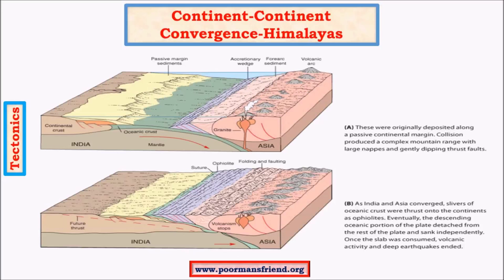One important point is that the Himalayan rivers - Ganga, Brahmaputra, and many other ancient rivers now extinct - were all present much before the formation of the Himalayas; they are much older rivers. When they were flowing they brought lots of sediments and deposited them in this depression or geosyncline called the Tethys Geosyncline, which we have seen when studying continental drift theory. This deposition gave rise to a lot of sediments in this geosyncline, and when the Indian plate started moving towards the Eurasian plate these sediments got compressed and folded.